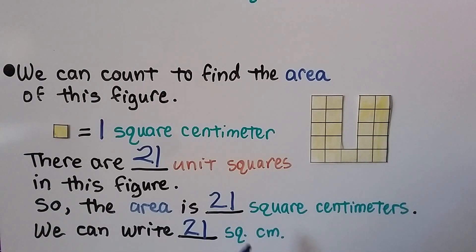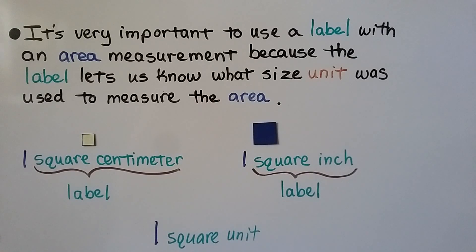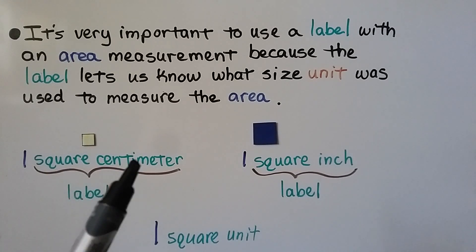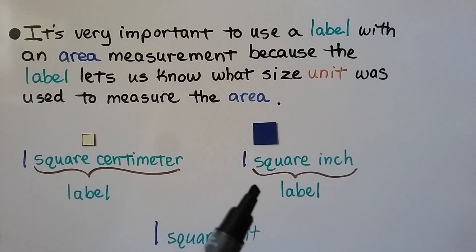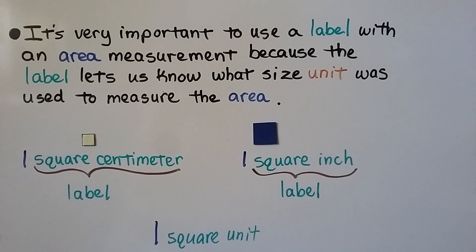So the area is 21 square centimeters, written as 21 sq. cm. It's very important to use a label with an area measurement because the label tells us what size unit was used. One square centimeter is its label. One square inch is another label. And if we don't know whether it's centimeters, inches, yards, feet, or meters, we can say one square unit.